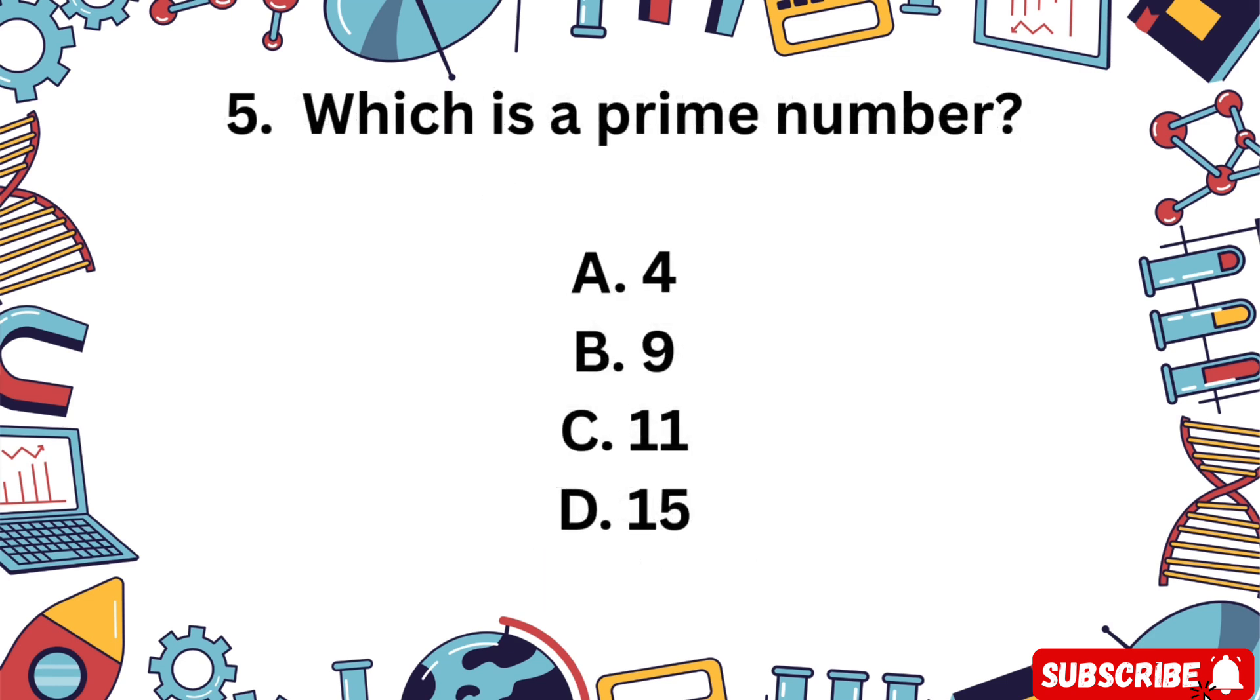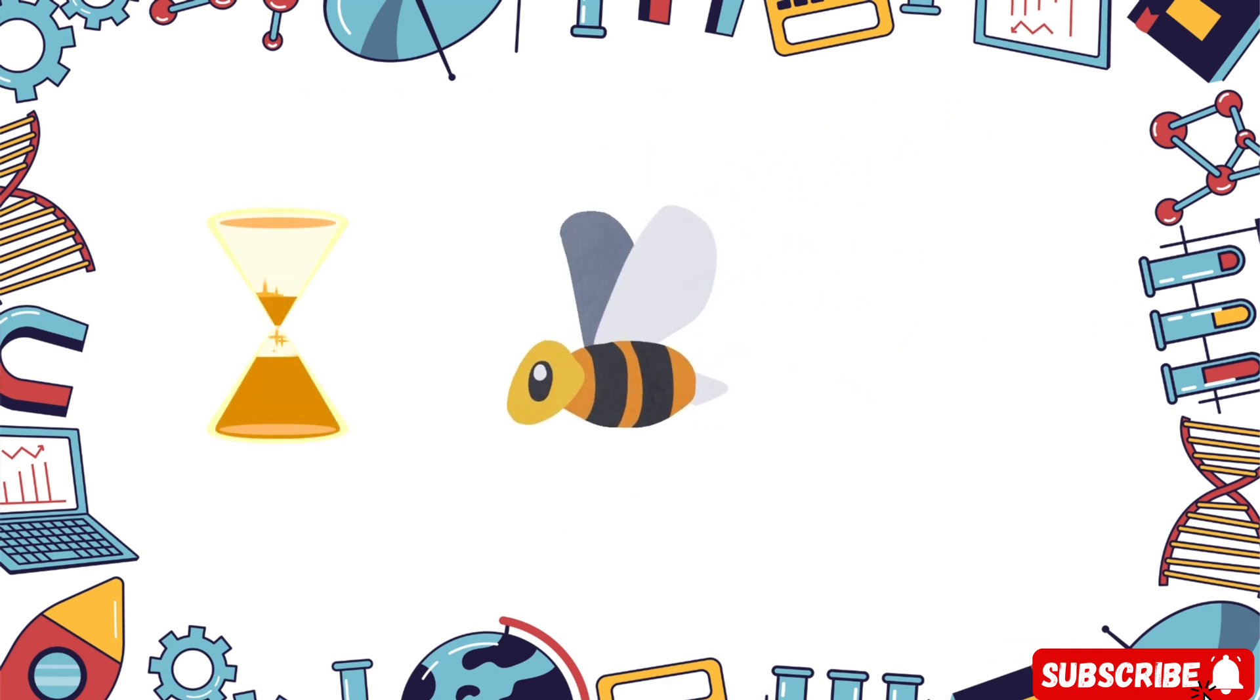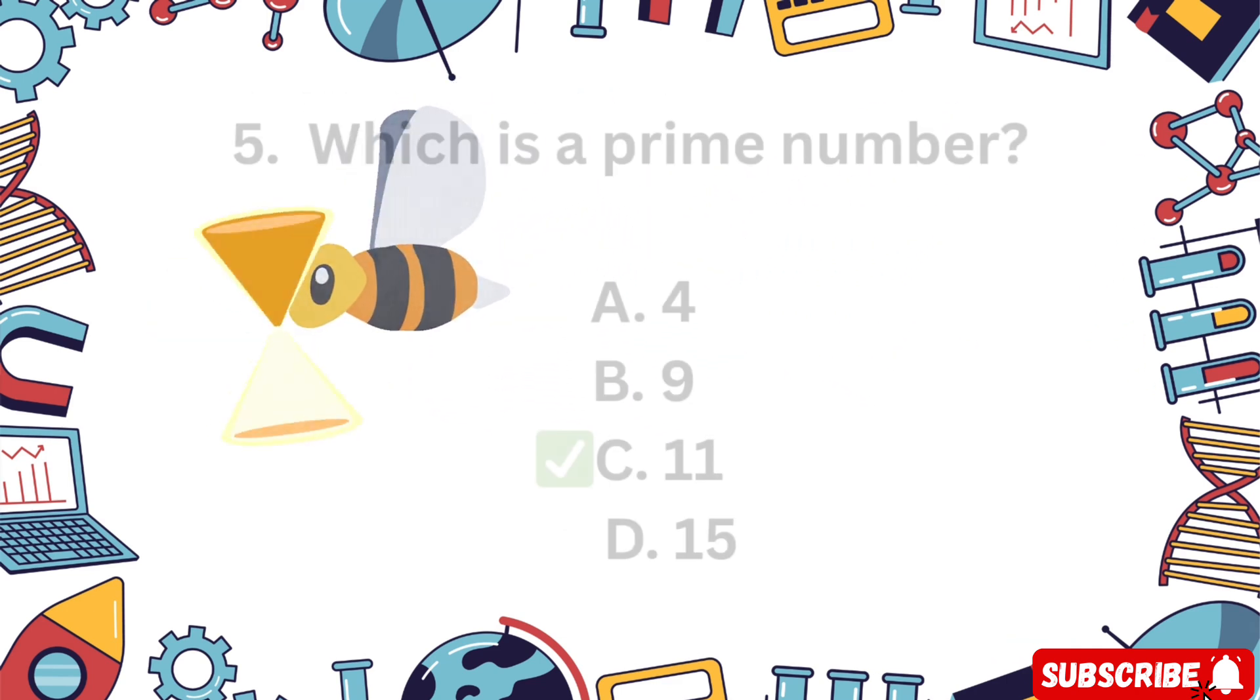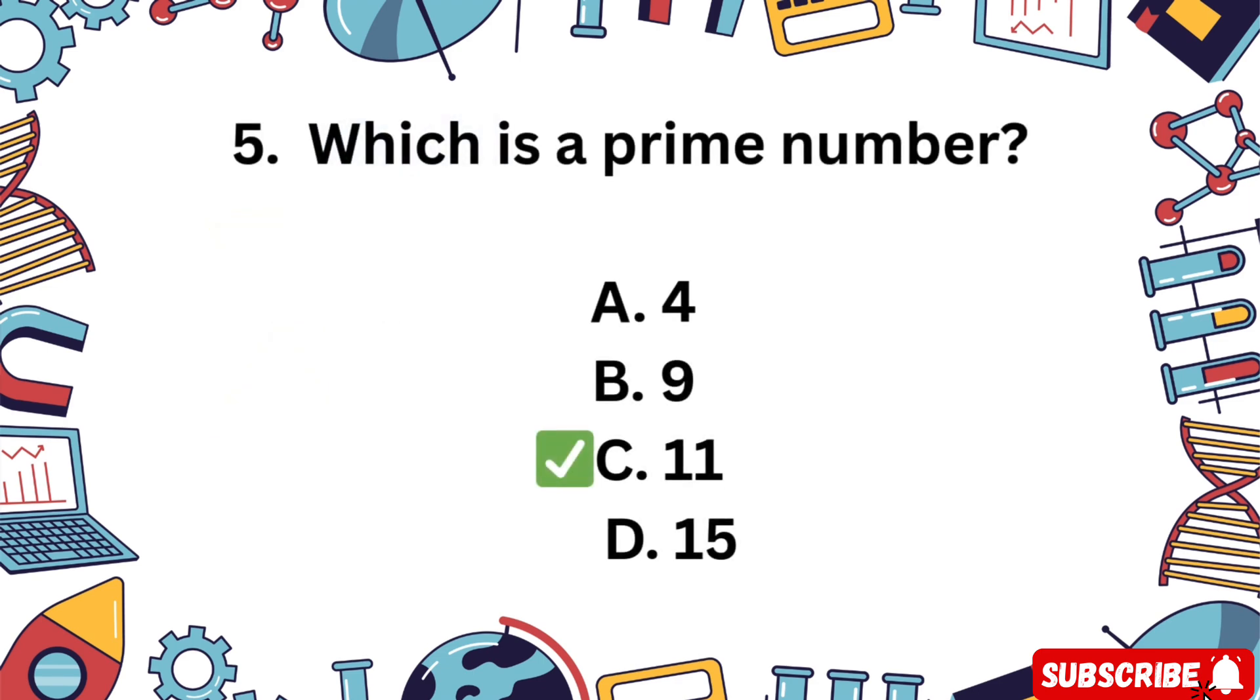Question 5. Which of these is a prime number? A 4, B 9, C 11, D 15. Which one can only be divided by 1 and itself? 5 seconds. The correct answer is C 11. It's a prime number.